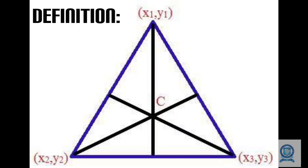For a plane area, the whole area is concentrated at a center point — that is called a centroid. For a solid object, the entire weight of the object acts from one point — that is called the center of gravity. Any object will tend to rotate about a certain point; that point is called the centroid or center of gravity.